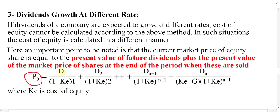So P₀ equals D1 divided by (1+Ke)¹, plus D2, D3, D4 and so on, adding D(n-1) — which is just one item before Dn — and finally Dn divided by (Ke − G), multiplied by 1/(1+Ke)^(n-1).